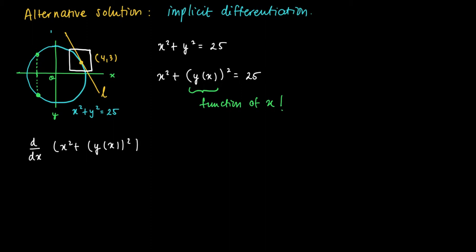So we may differentiate the function x squared plus yx squared. But if we apply differentiation to the left-hand side of the equation, we have to perform the same operation on the right-hand side. So we have to take the derivative of 25.